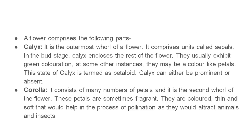Usually the calyx is green. In a certain instance it is a colored one. Calyx is very prominent at the bud stage, which is petaloid. The corolla is the most fascinating structure of the flower. The colors attract pollinators. The petals are very small but strong, very fragrant, elegant, colorful, thin, and soft. This is involved in the process of pollination — animals and insects are attracted.